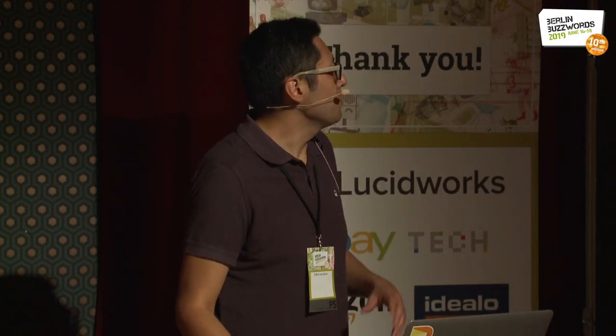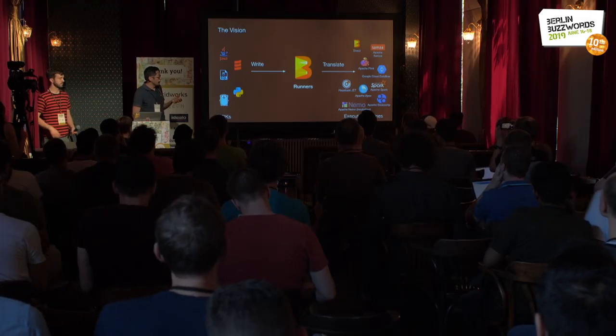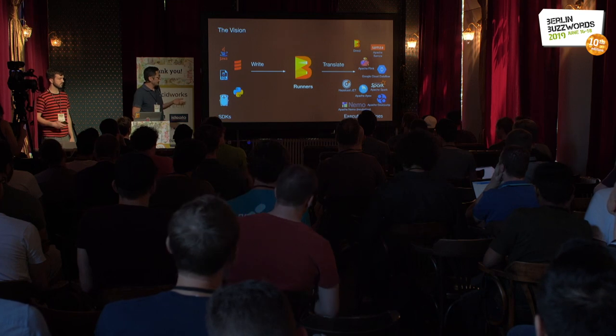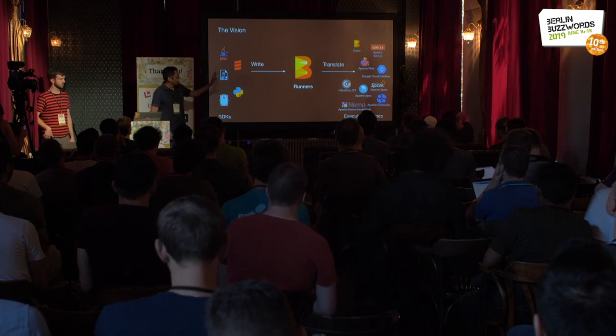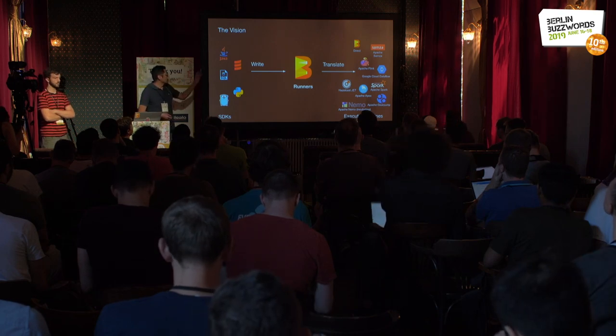The vision is that on one side we have the languages you can use to express your data processing pipelines, including SQL on top of Java and Scala also on top of Java. Beam has the concept of Runners. Runners translate this code into the target code of the execution system — for example, a ParDo in Beam becomes an RDD.map in Spark or the equivalent in Flink.